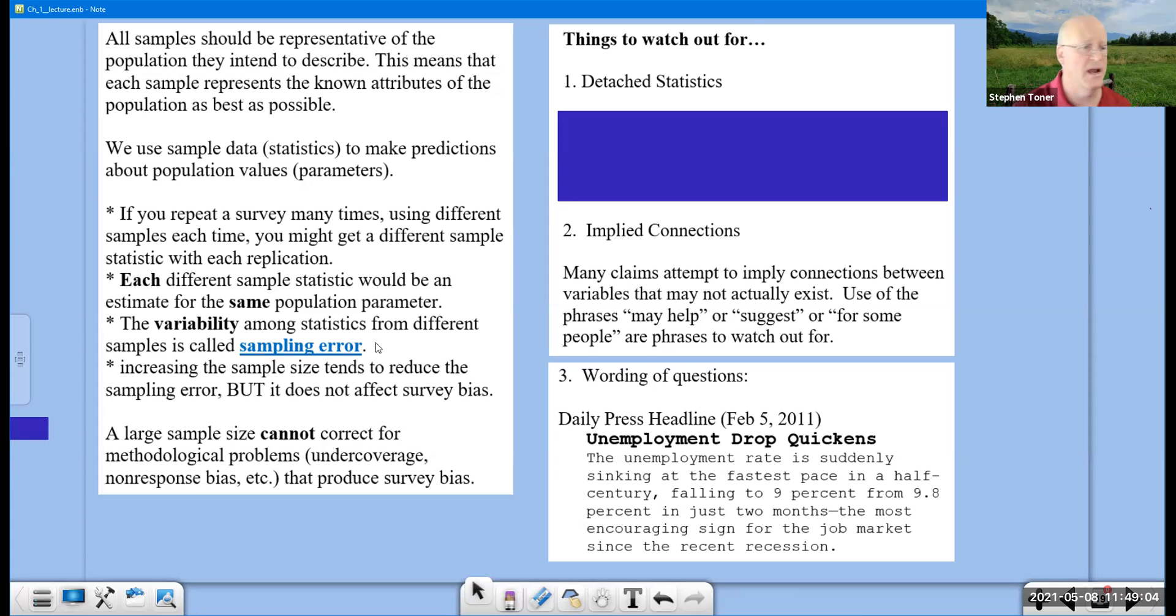We always want to try to reduce the error, but increasing the sample size tends to reduce the sampling error, but it does not affect survey bias. It's not always going to be get more people and that solves all your problems. If you have a bad survey method, no matter how often you stand in front of Walmart in the middle of the day, you're not going to get those people who worked during the day. Increasing sample size does minimize the error, but it does not make up for poorly designed studies or survey bias. A large sample size cannot correct for methodological problems like under coverage or non-response that produce survey bias.